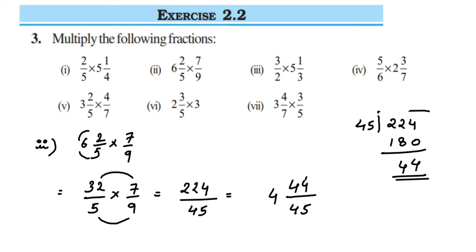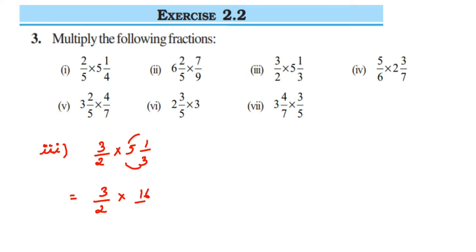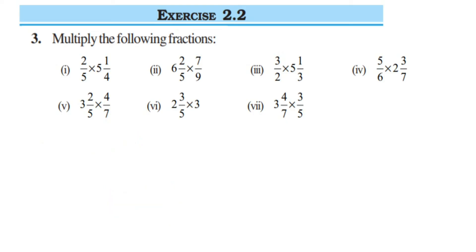Third sub-question: 3/2 multiplied by 5⅓. Convert the mixed fraction: 3 times 5 is 15, plus 1 is 16, so 16/3. Now we have 3/2 multiplied by 16/3. Can we cancel? Yes - the 3 in the numerator and the 3 in the denominator cancel. Also 2 and 16 cancel: 2 eights are 16. We're left with 1 and 8 in the numerator, and 1 in the denominator. So 8 upon 1, which is just 8.